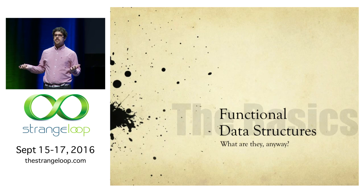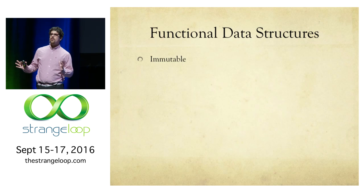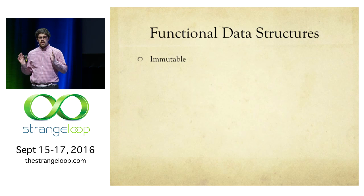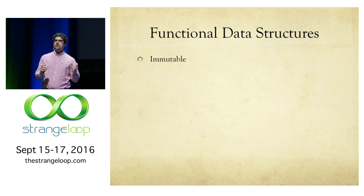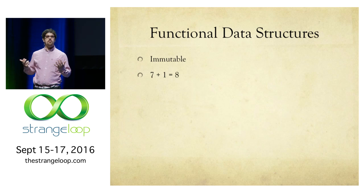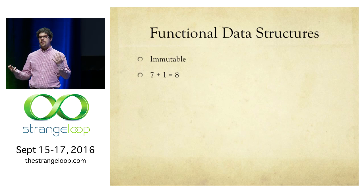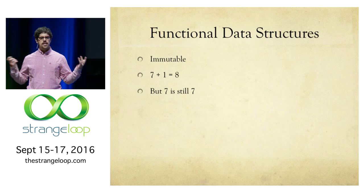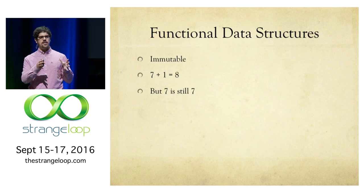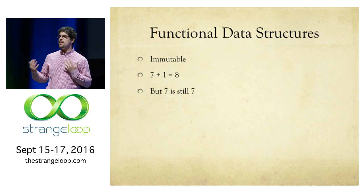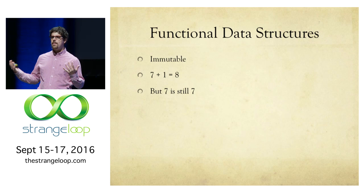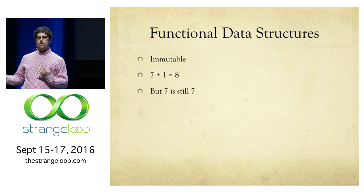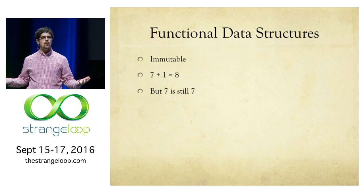So what are functional data structures? At their core, a functional data structure is immutable. That's really the difference between a functional data structure and a regular data structure. So what does immutable mean? Well, consider seven. When we add one to seven, we get eight. But the thing is, seven is still seven. If you think about what does an array, or a list, or a map do in most languages, when you add an element to that, that's not what happens.